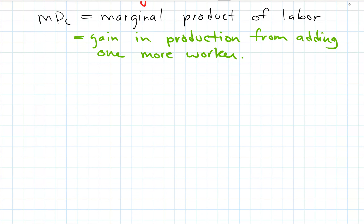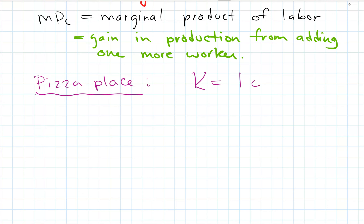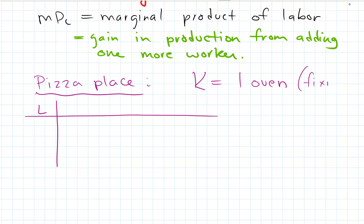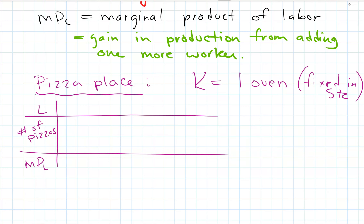We're going to stick with the example of a pizza place. Our capital is fixed: we have one oven. Our workers are going to vary — we can change our workers. So we're making a little chart with labor, capital fixed at one oven, the number of pizzas they can make in one hour, and the marginal product of labor — the change in pizzas compared to the change in labor. That tells us how much extra production we get from having one more worker.